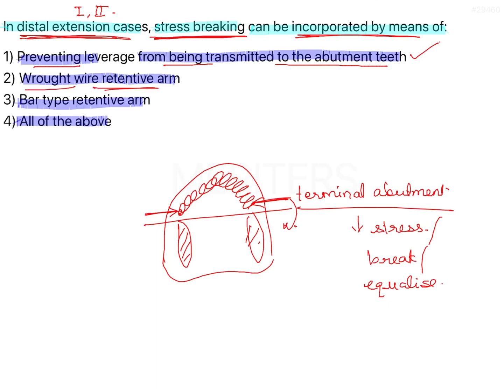That means if you use a flexible retentive arm compared to a casted retentive arm, the forces are reduced on the terminal abutment because this is more flexible. Wrought wire is more flexible compared to cobalt chromium.